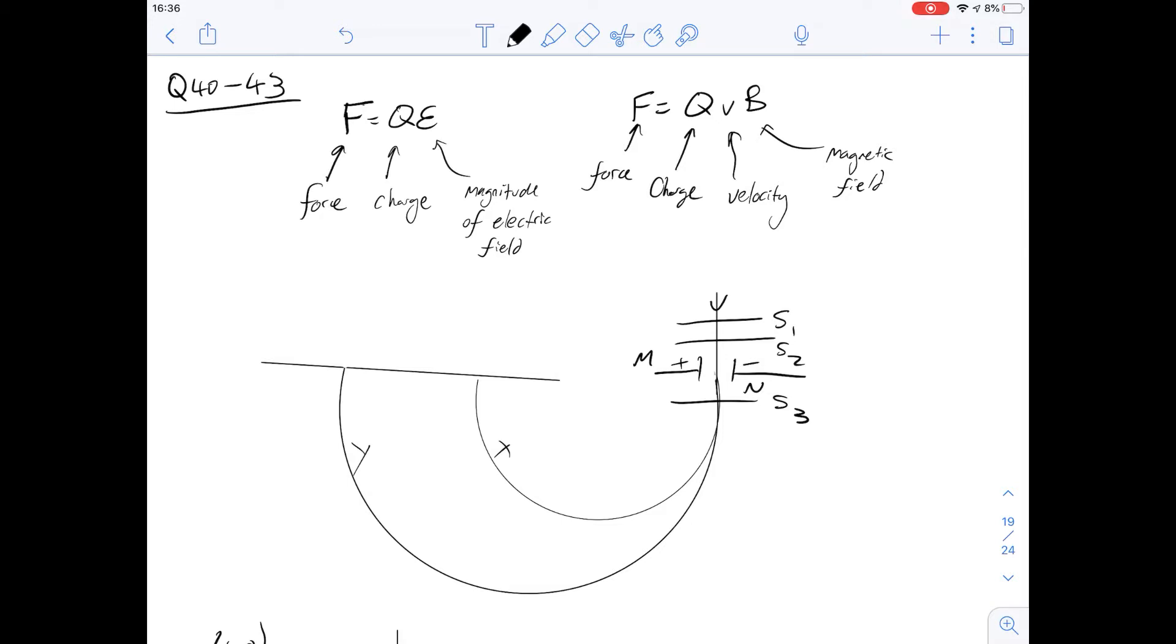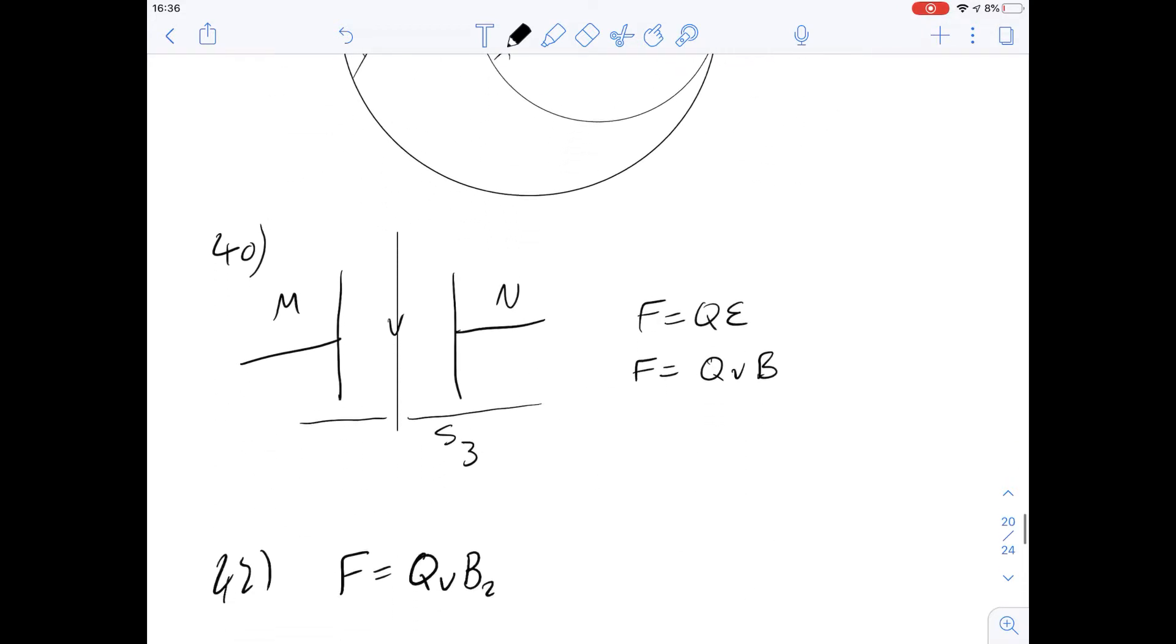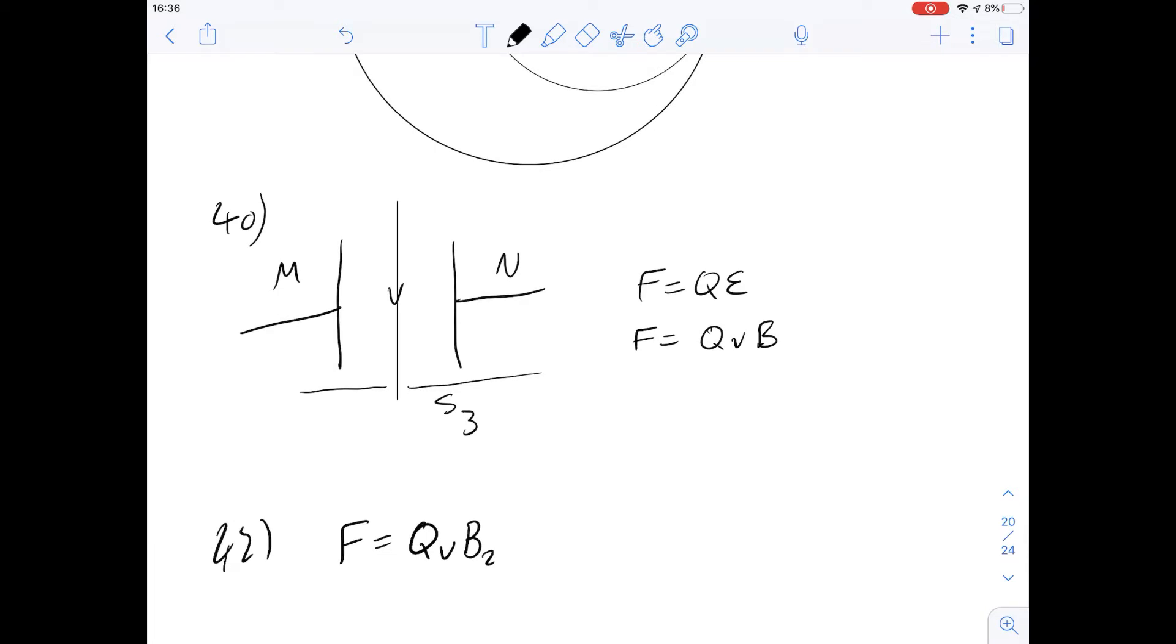I've drawn out the apparatus here, but there's a better figure in the paper itself. Question 40 says the speed of an ion passing through slit S3 is given by what? I've got a diagram here of just the isolated region that we're going to be working with.